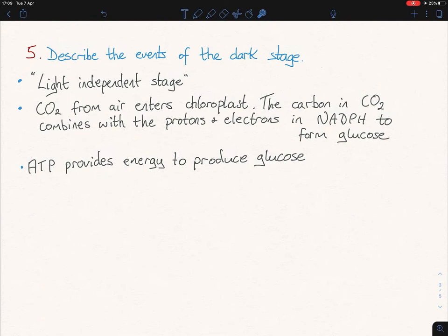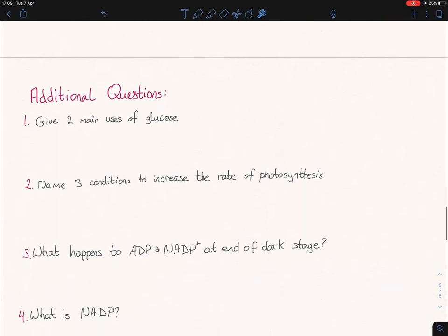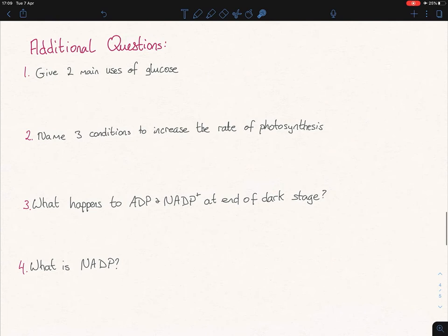ATP as we said already, helps to just provide that energy for the reaction between the carbon dioxide and NADPH. So look, that's it for this one here, guys. If we continue on, there are some additional questions that could be asked, which I have here. And we'll quickly go through them. Give two main uses of glucose. It's used in respiration. It could be provided for food for animals. It also converts to starch, which also can go into the food for animals category.